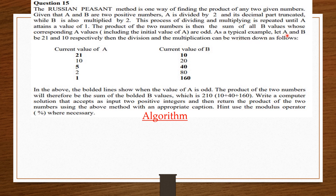As a typical example, let a and b be 21 and 10 respectively. The division and multiplication can be written down as follows. The bordered lines show when the value of a is odd. The product of the two numbers will therefore be the sum of the bordered b values, which is 210 — that is 10 plus 40 plus 160. Write a computer solution that accepts as input two positive integers and returns the product using the above method with an appropriate caption. Hint: use the modulus operator where necessary.